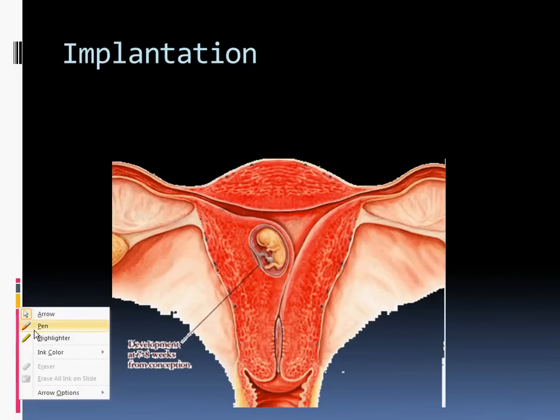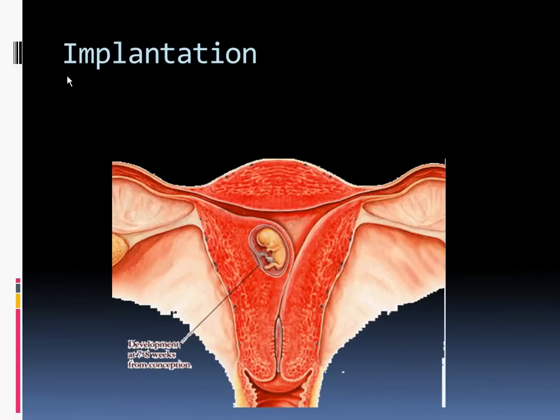So implantation is going to be what occurs after fertilization. Implantation is within the uterine lining, and the connection between the maternal and the fetal environment is going to be this tissue that grows the placenta. It takes about three months to be fully formed, and it is what will attach the umbilical cord to the uterine lining.